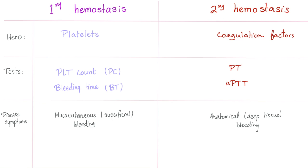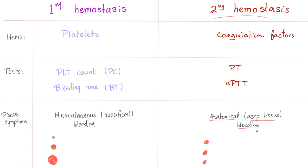Primary hemostasis versus secondary hemostasis: in primary, the hero is platelets; in secondary, coagulation factors. Platelets come from the bone marrow, from megakaryocytes. Most coagulation factors come from the liver. Tests: platelet count and bleeding time for primary; PT and PTT for secondary. Symptoms of primary hemostasis disease: superficial mucocutaneous bleeding — petechiae, purpura, ecchymosis. Symptoms of secondary hemostasis disease: deep tissue bleeding — joints, muscles, intracranial, post-dental procedures.